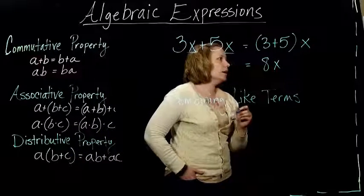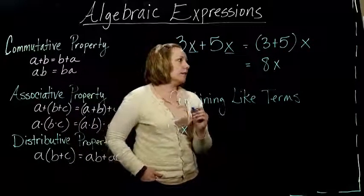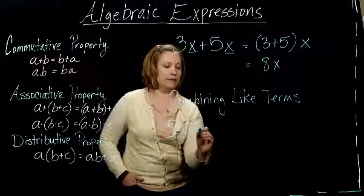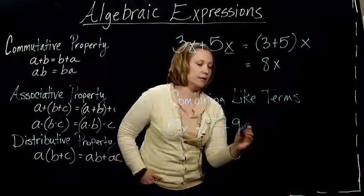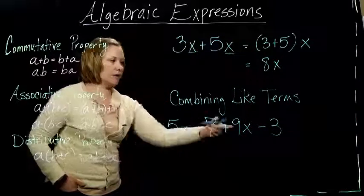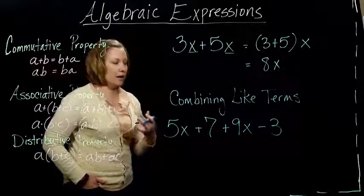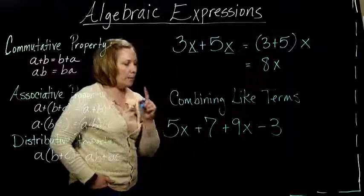Another example - we can have something a little bit more complicated, like 5x plus 7 plus 9x minus 3. We can see we've got some like terms in here, but they're not next to each other. Up here, they were right next to each other. Here, not next to each other.